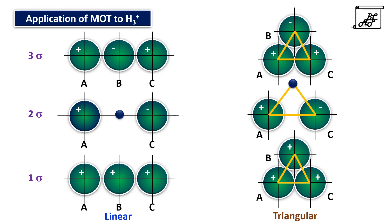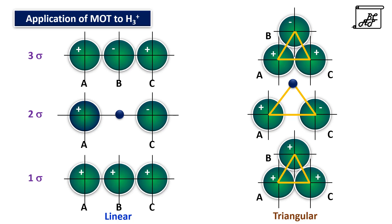When we compare the linear arrangement versus triangular arrangement: in case of 1 sigma bonding molecular orbital in linear arrangement, there is bonding between A and B and bonding between B and C — two net bonding characters. Whereas in triangular arrangement, there is bonding between A and B, bonding between B and C, and bonding between A and C — three net bonding characters. As the bonding character increases, the energy of the system decreases.